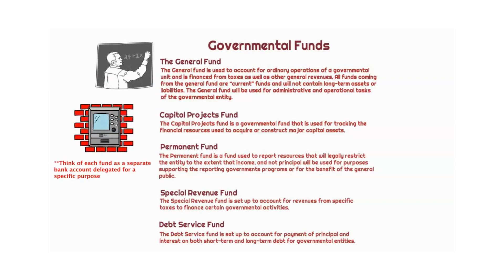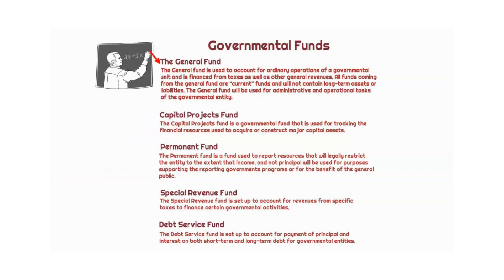Think about each of these funds as special savings accounts — special bank accounts that are separated so that they can apply money to specific projects or very specific government-related expenditures. Starting with the general fund, this is going to be used to account for ordinary operations of a governmental unit, and it's going to be financed generally from taxes as well as other general revenues. The general fund is used to account for financial sources that are not restricted to specific purposes or otherwise required to be accounted for in another fund. An example of this could be to purchase supplies to meet operating expenditures.